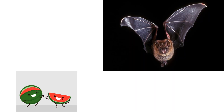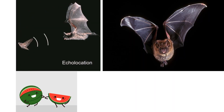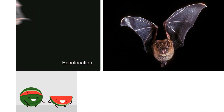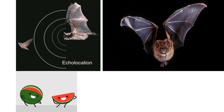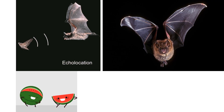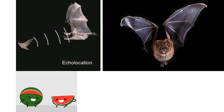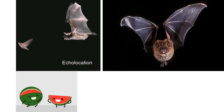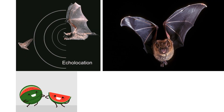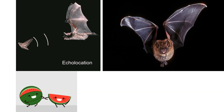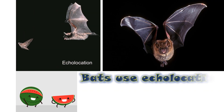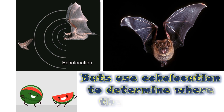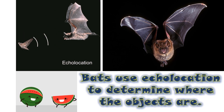Do you know that bats give out sounds to navigate and to find food? When the sounds hit on the prey, the sounds bounce back to the bats. From these echoes, the bats are able to detect the prey. Bats use echolocation to determine where the objects are.